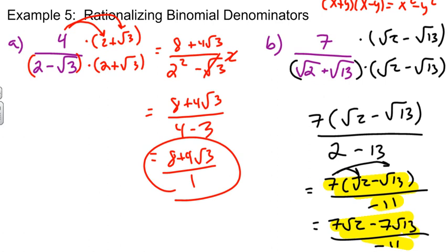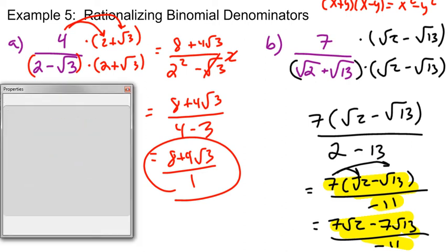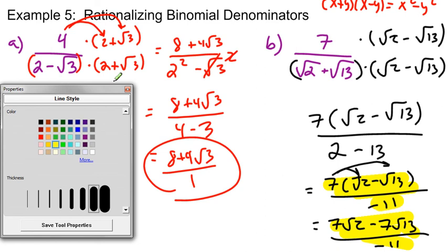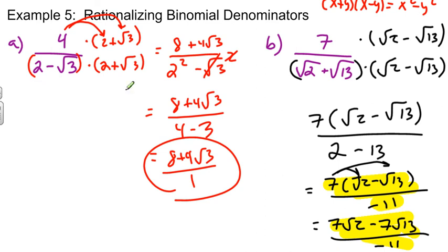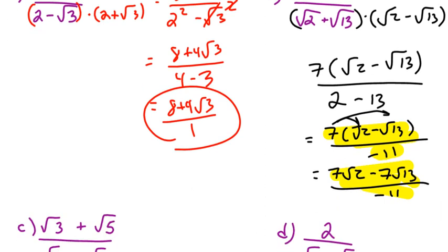If you want to know which form is really preferred, it's the first one where the 7 is factored out. Let's go on now to more examples.